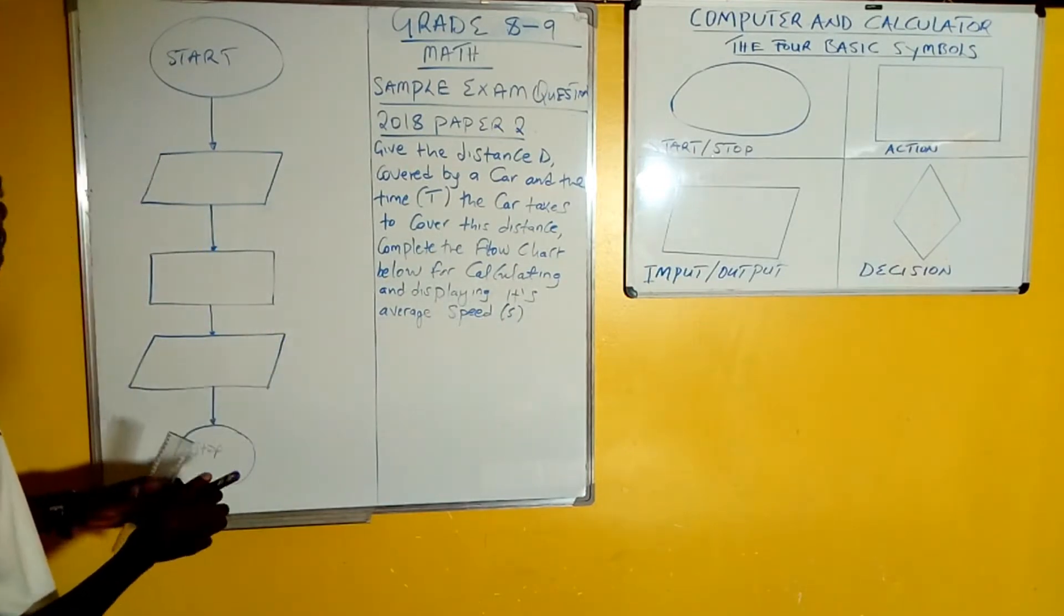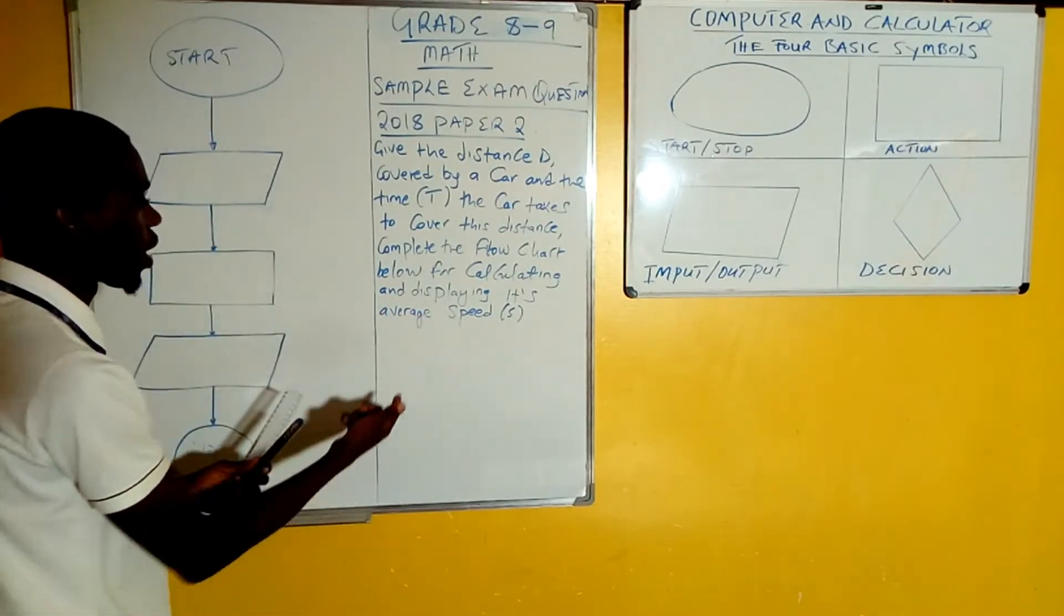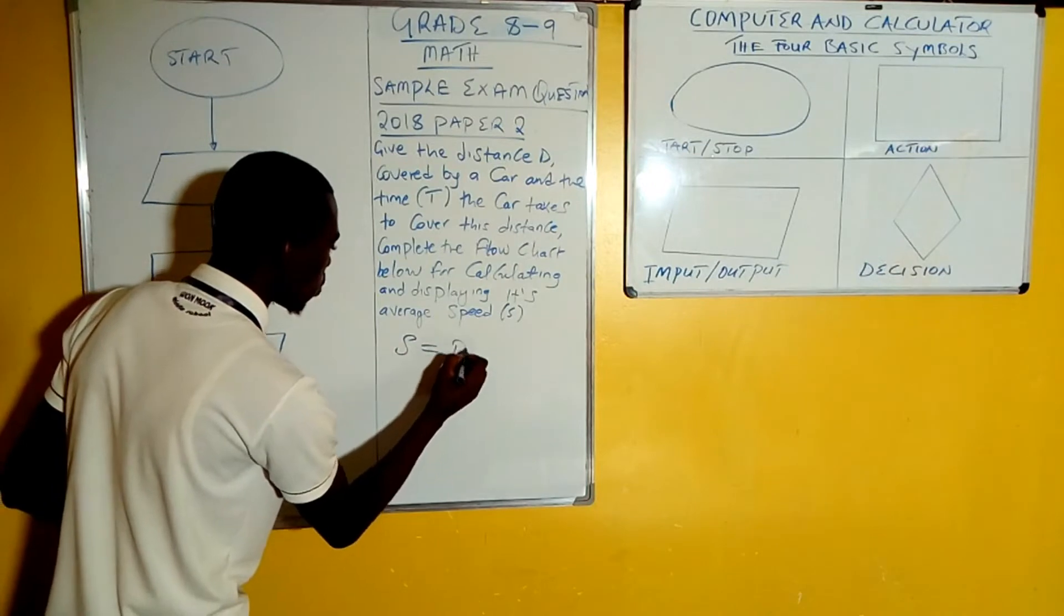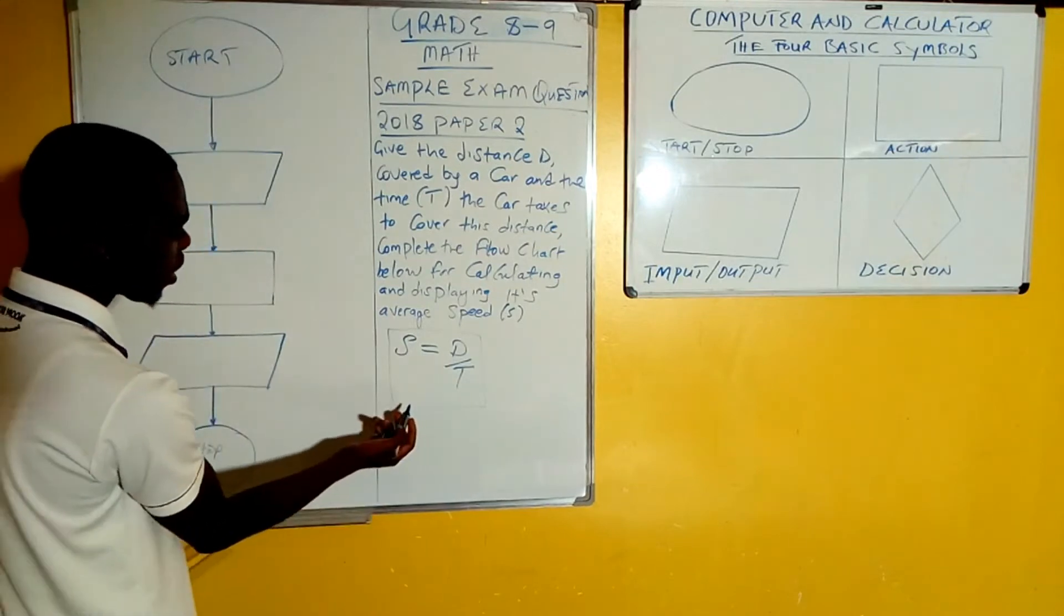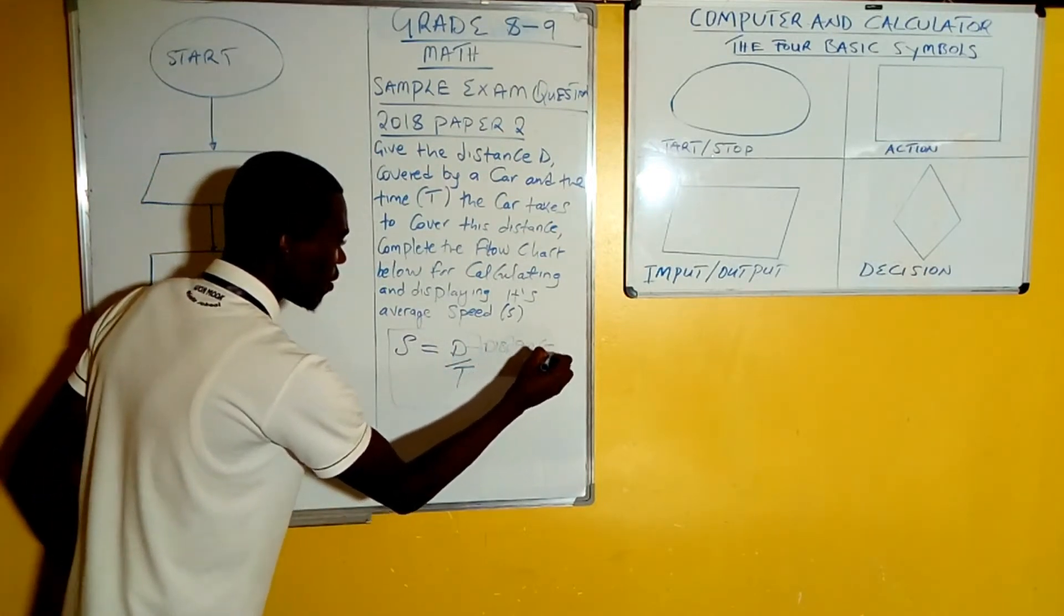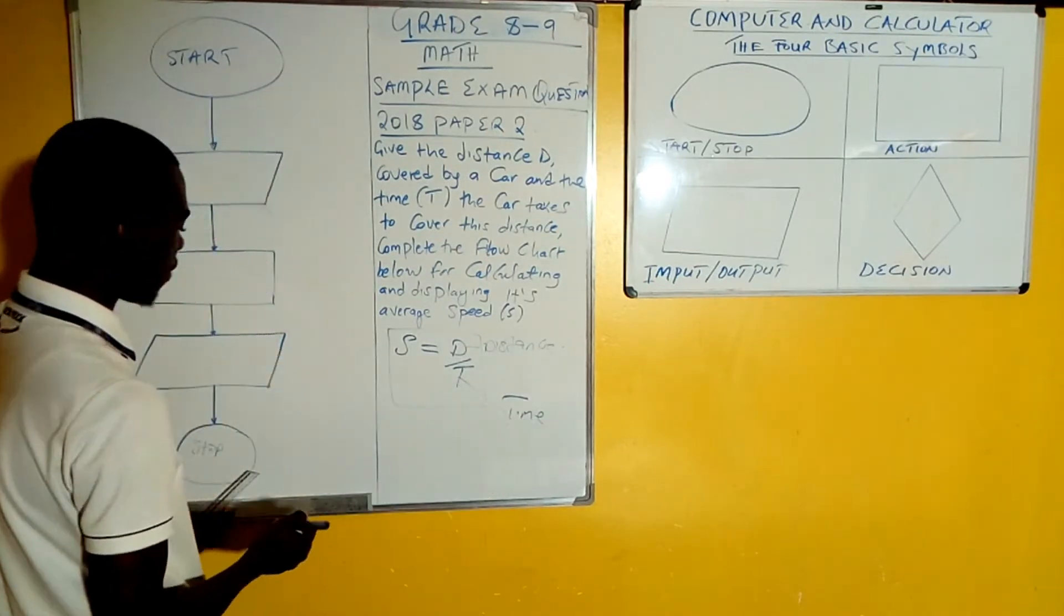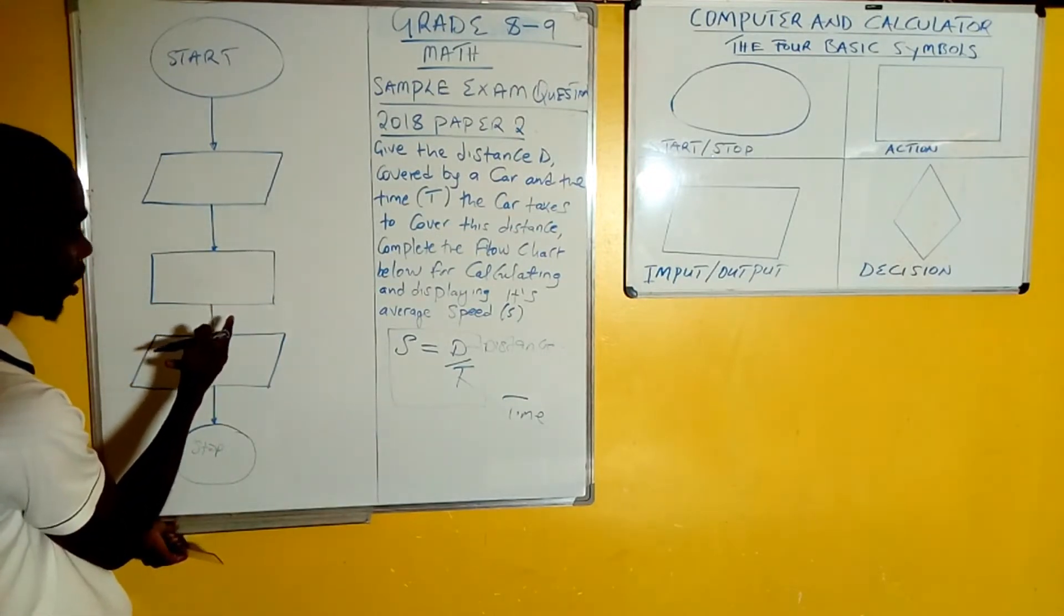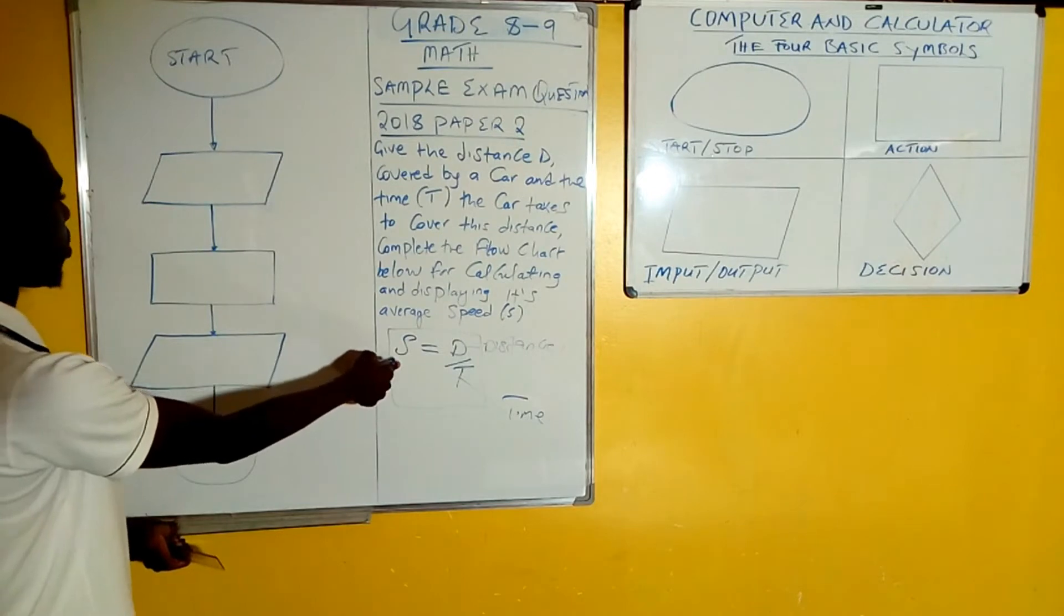The main point here is the average speed. Before you can start plugging in your inputs, you need to know the formula for speed. The formula for speed is: speed equals distance over time. In order to get speed, you need the value of the distance d and the time t. When these are given to you, you can calculate the results. In your computer, when you put in d and t, you'll be able to get the speed.